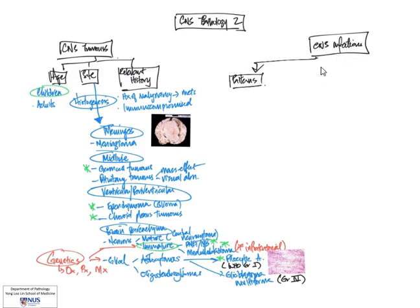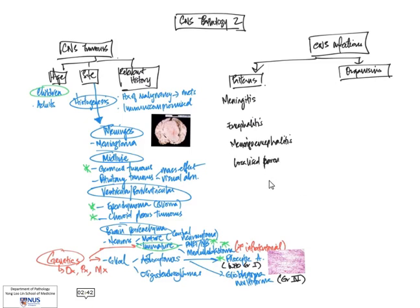Moving on to CNS infections, we just want to have a broad approach which is to correlate the patterns of infection to specific types of organisms. Starting off with meningitis, followed by encephalitis, and then a combination, meningo-encephalitis. And finally, localized parenchymal infections, whether they are abscesses or whether they are just discrete areas of infection in the brain parenchyma.